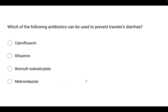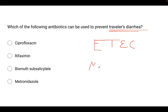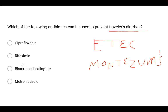Which of the following antibiotics is used to prevent traveler's diarrhea? This is caused by ETEC — enterotoxigenic E. coli — also known as Montezuma's revenge. The correct answer is rifaximin, which is an RNA polymerase inhibitor.